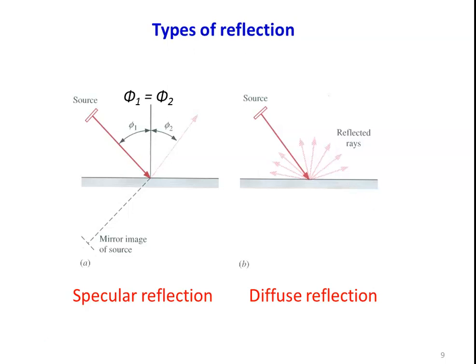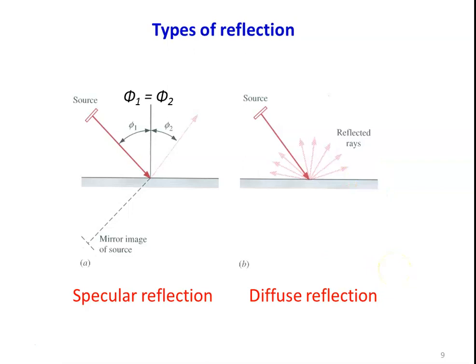There are two types of reflection: specular reflection and diffuse reflection. In specular reflection, energy falls on the surface at angle phi 1 and is reflected at angle phi 2. When phi 1 equals phi 2, it is called specular reflection — the two angles are mirror images. When energy falling on the surface is reflected in all directions, that is called diffuse reflection. Surface roughness, impurities, oil, grease, or irregularities on the surface cause diffuse reflection. The majority of engineering surfaces are diffuse in nature — they reflect in all directions.